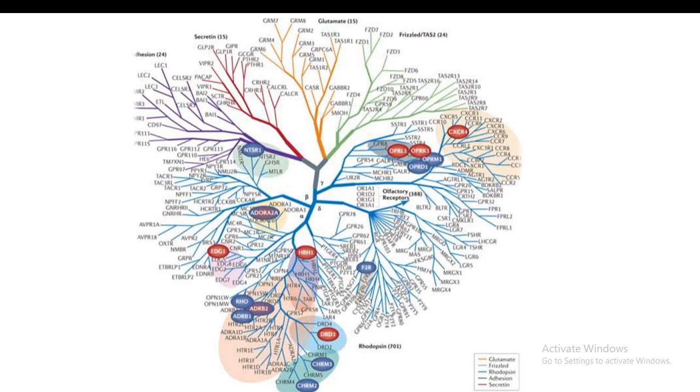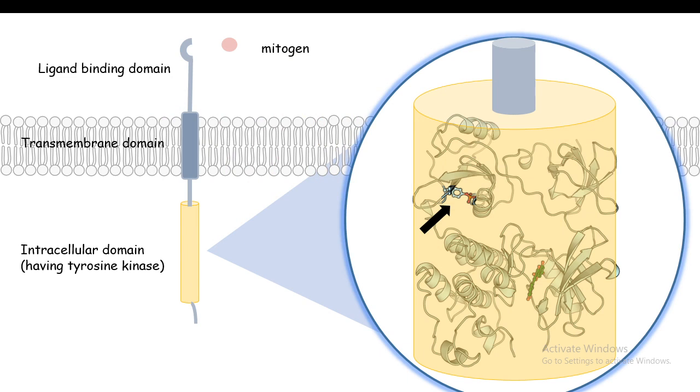The MAP kinase signaling pathway starts with the receptor tyrosine kinase. The most important part of the receptor tyrosine kinase is the tyrosine kinase domain, which is the C-terminal domain.